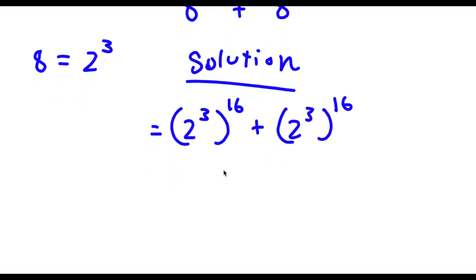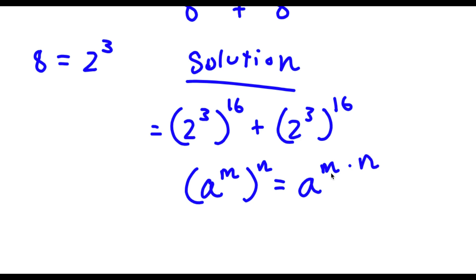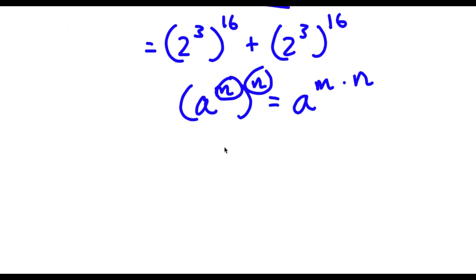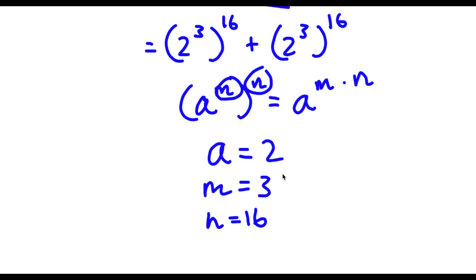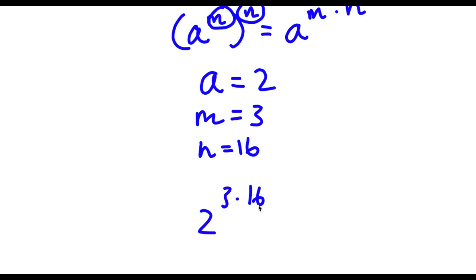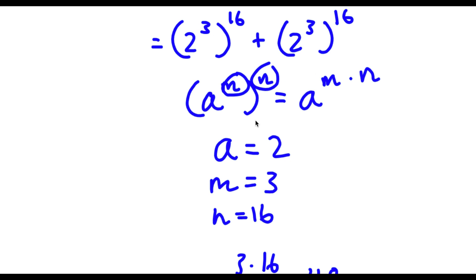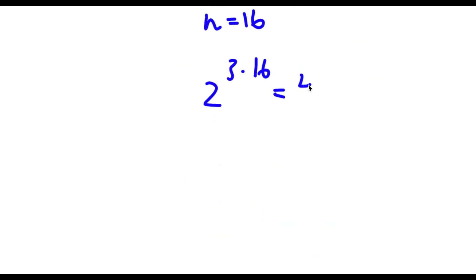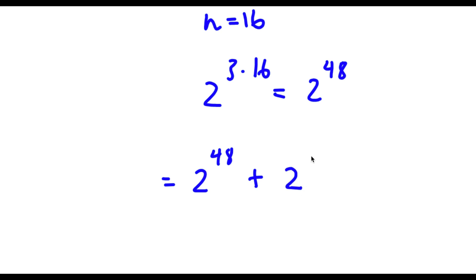Now if I have something in the form a to the power of m to the power of n, this is the same thing as a to the power of m times n — so these two exponents simply multiply. In this case I have 2 to the power of 3 to the power of 16, where a is 2, m is 3, and n is 16. So this equals 2 to the power of 3 times 16, and 3 times 16 is 48. So now I have 2 to the power of 48 plus 2 to the power of 48.